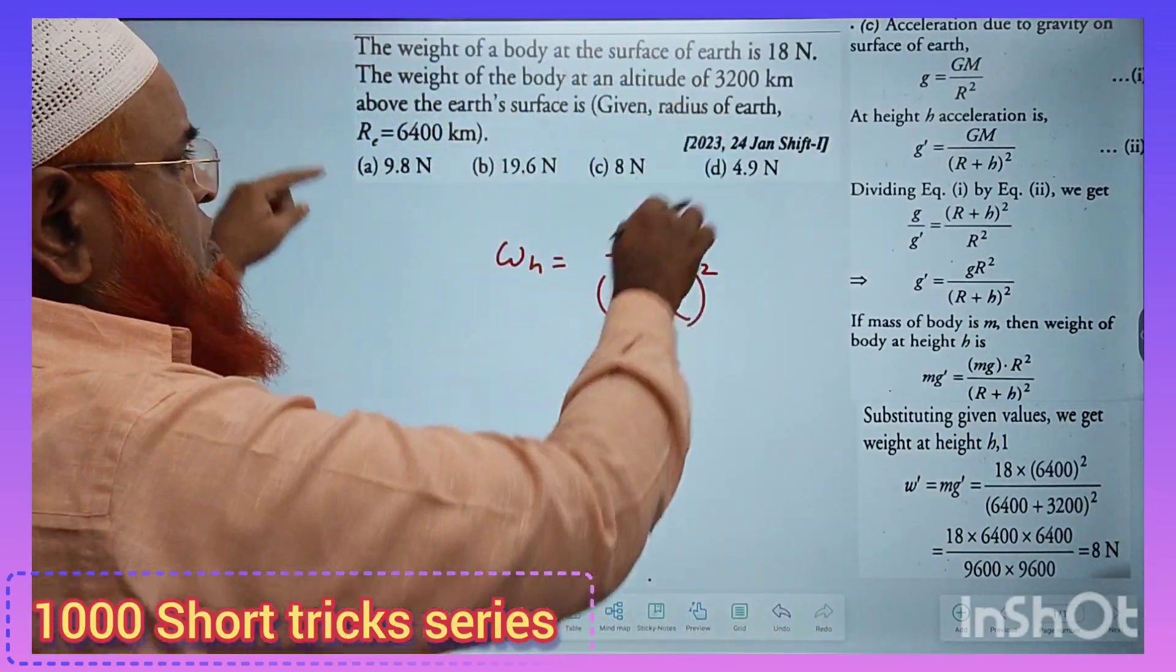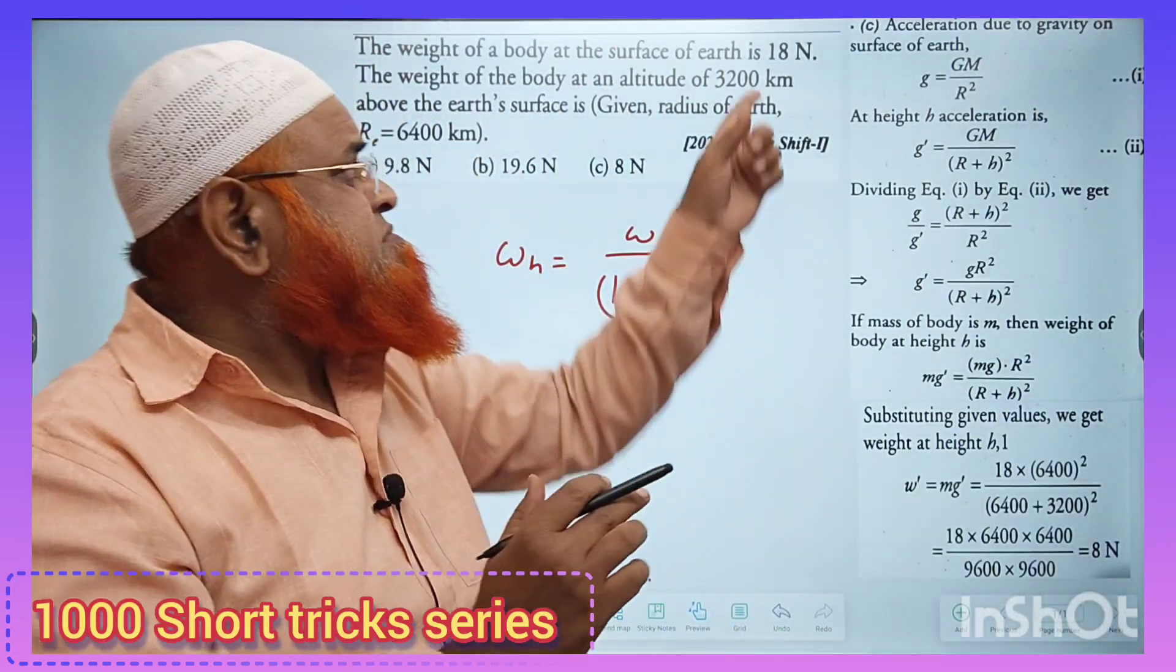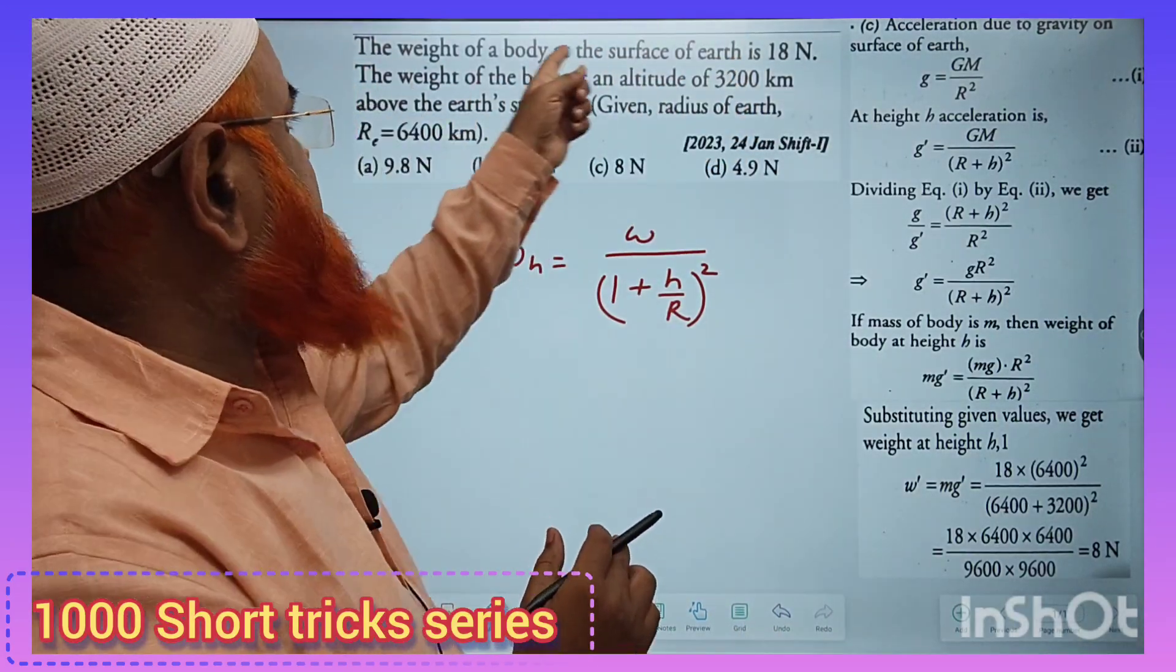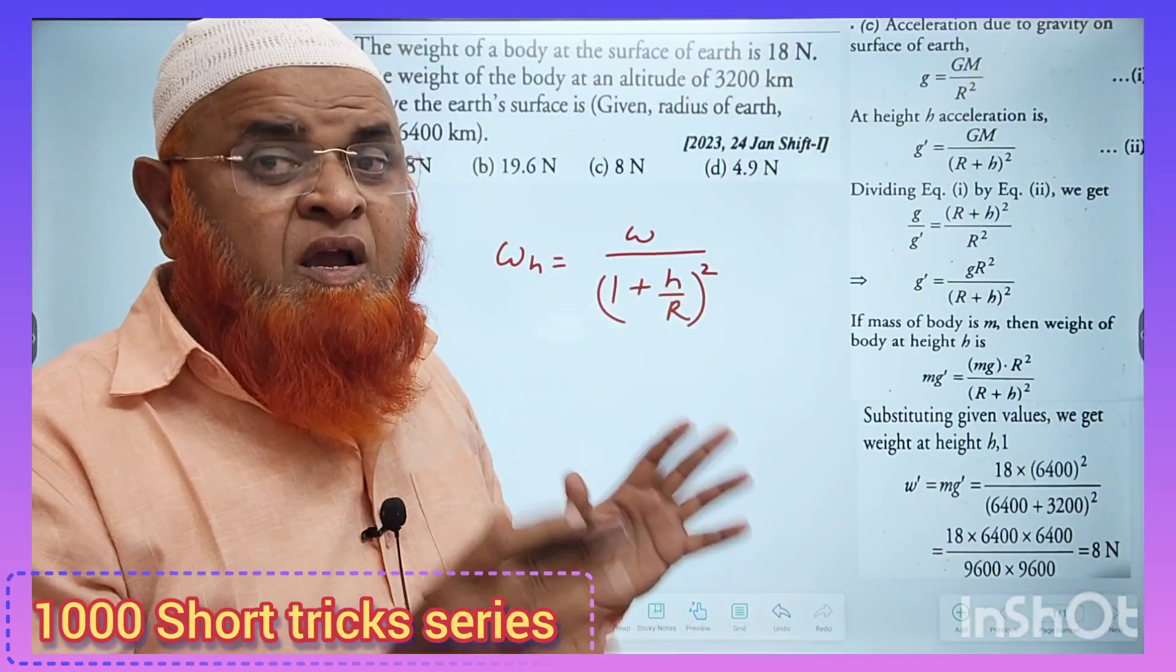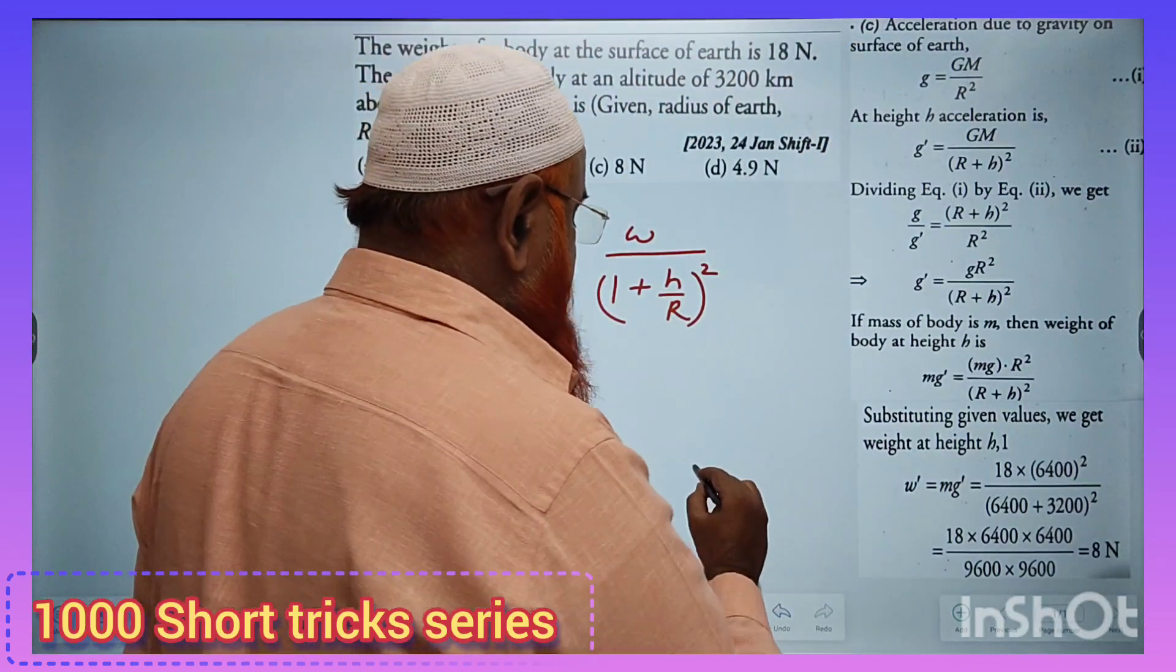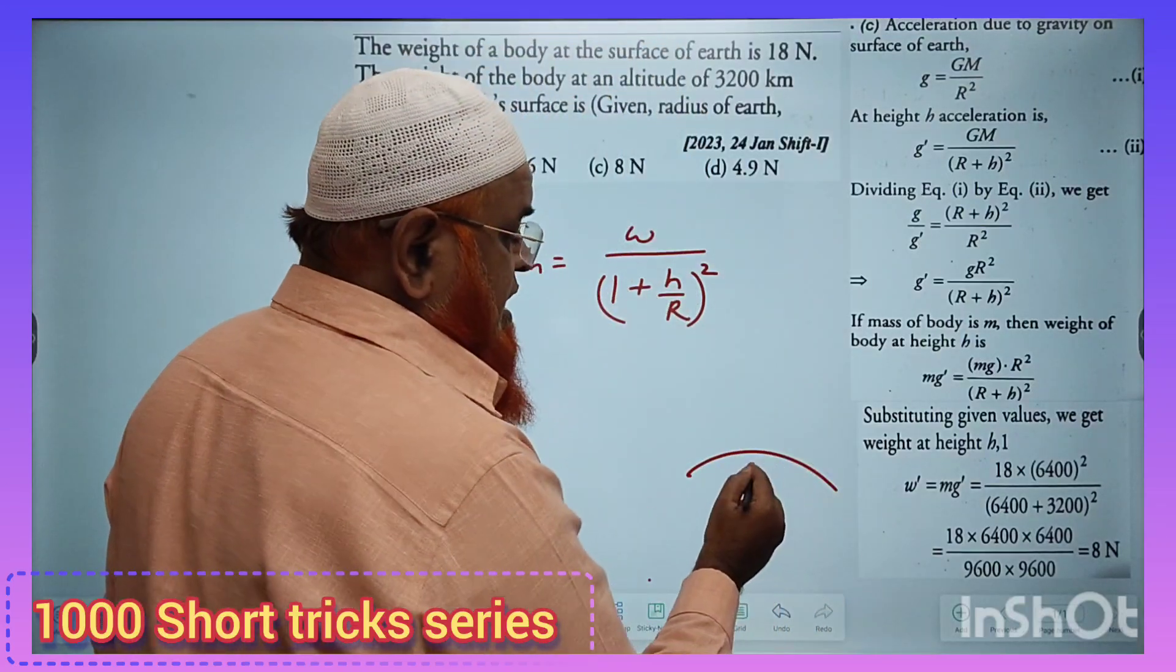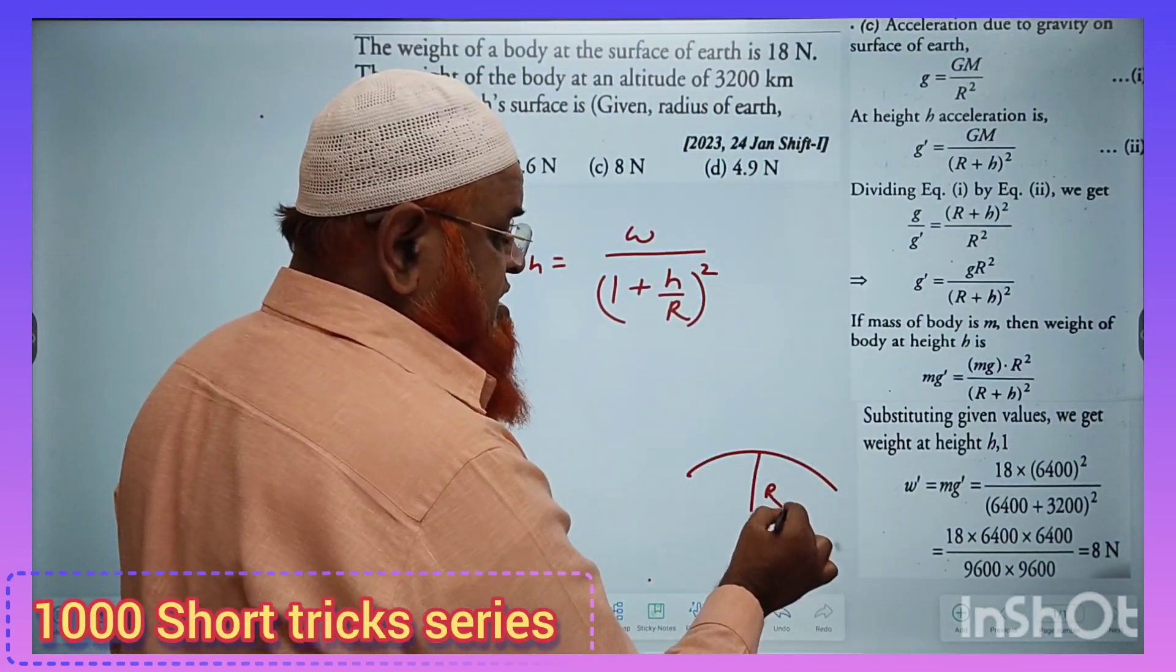You can just see, if it is given that the weight on the earth is 18 newtons, weight on the surface of the earth is 18 newtons. What does it mean actually? This is the earth, whose radius is r.